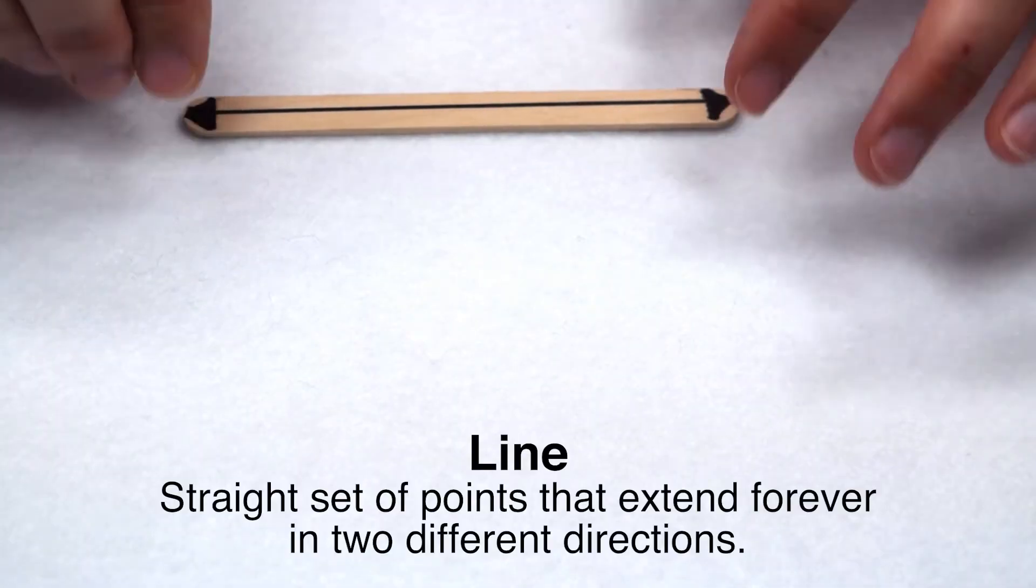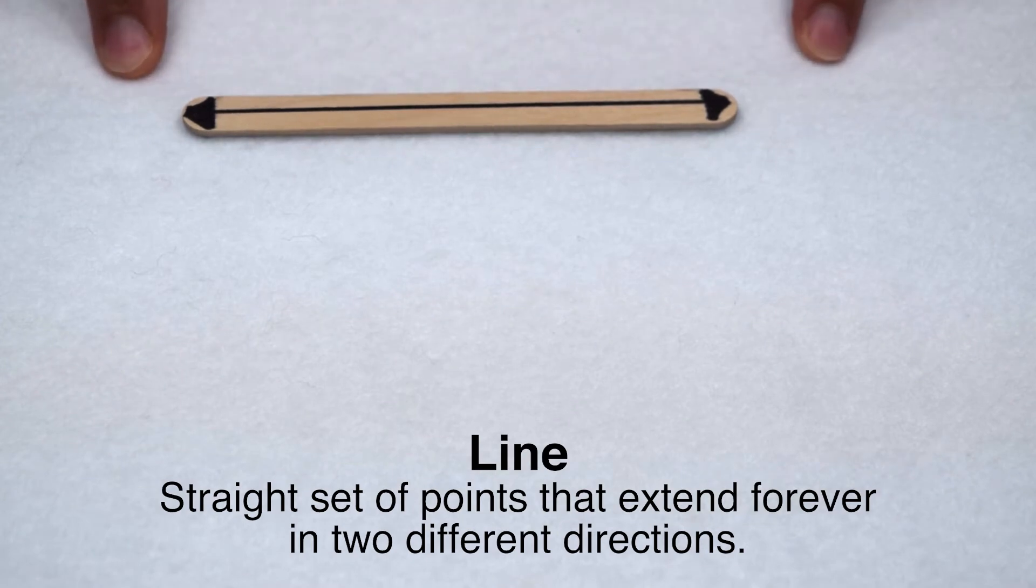Once we have a point, we can then go on to create a straight line. A straight line is a set of points that extends forever in two different directions. We show it goes on forever or to infinity by putting arrows on both ends.